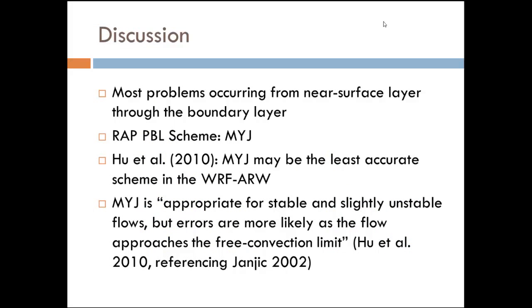Most problems are occurring in the near-surface layer through the boundary layer, which leads us to questioning what's happening with the planetary boundary layer scheme — especially because it's different from the RUC. The PBL scheme in the RAP is the MYJ. There was actually a study from 2010 that looked at three different PBL schemes in the WRF-ARW, which is also the core of the RAP. They found that the MYJ might actually be the least accurate scheme in the WRF-ARW, and they also cited Janjić 2002, which introduced the MYJ, saying it's appropriate for stable and slightly unstable flows but is likely to have more errors as you get more unstable.